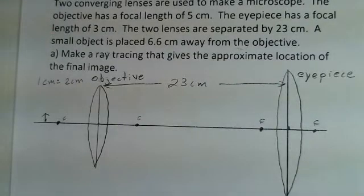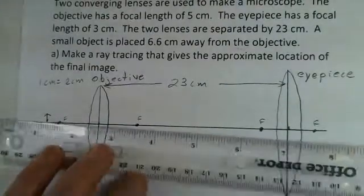First we'll do a ray tracing that locates the approximate place where the image would be found, and then we'll do a calculation on the overall magnification. So I'm going to attempt to do the ray tracing here. I've got kind of a small object, but that's what you look at with microscopes.